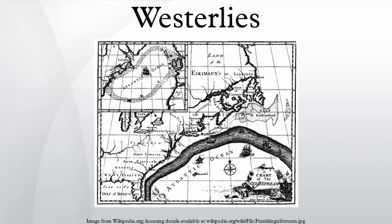The westerlies, antitrades, or prevailing westerlies, are prevailing winds from the west toward the east in the middle latitudes between 30 and 60 degrees latitude. They originate from the high pressure areas in the horse latitudes and tend towards the poles and steer extra-tropical cyclones in this general manner.